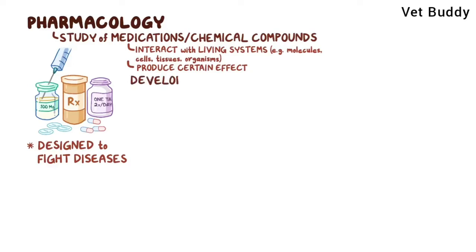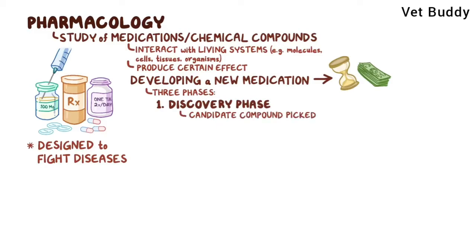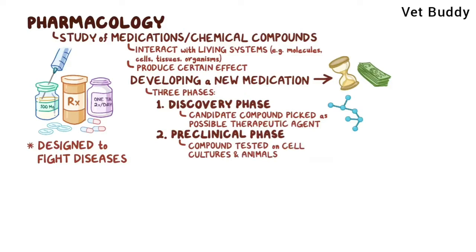The process of developing a new medication can take a lot of time and money, and it typically consists of three phases. First, there's the discovery phase, in which a candidate compound is picked out as a possible therapeutic agent for a specific disease. Then there's the preclinical phase, during which this compound is tested on cell cultures in animals, like mice and rats, mainly to see if it causes any serious harm.